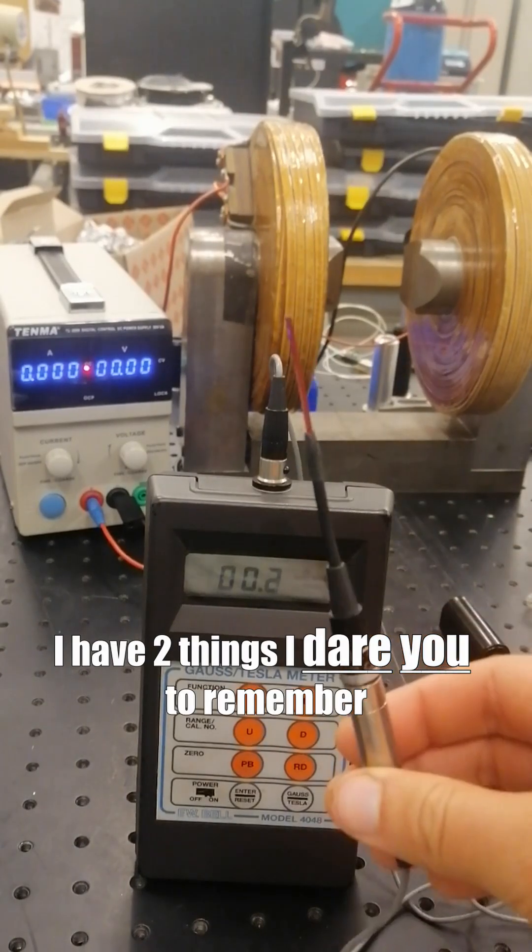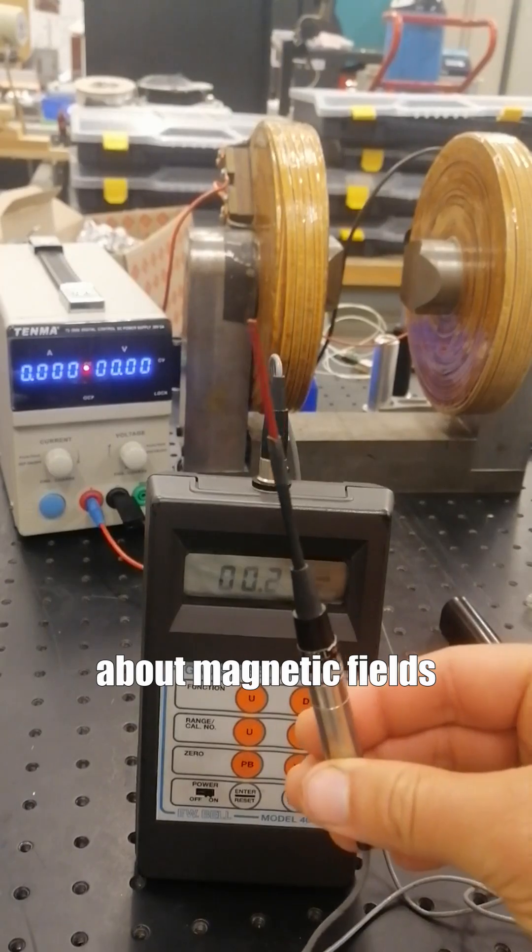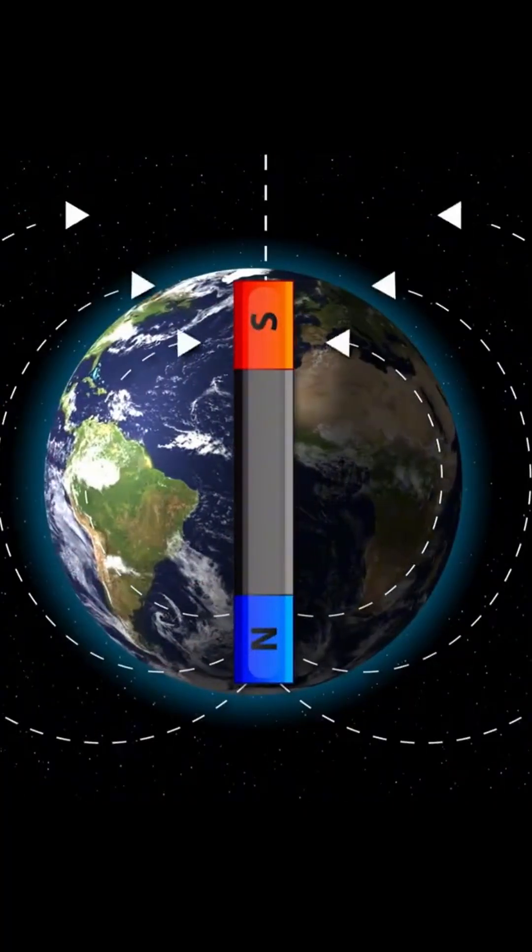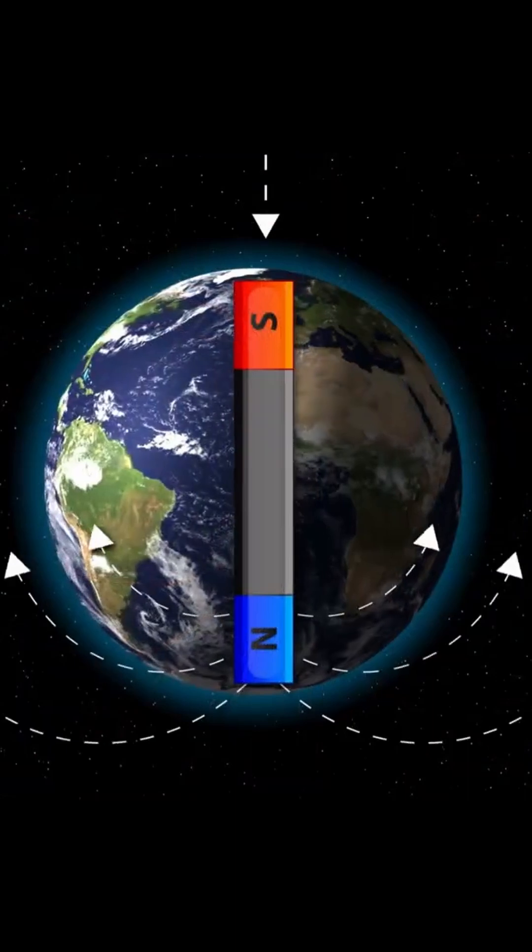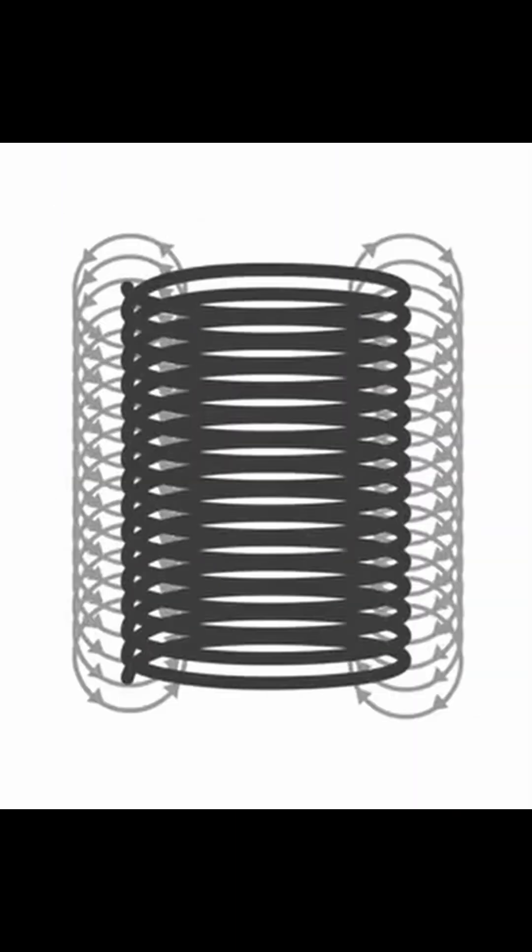And before measuring it, I have two things I want you to remember about magnetic fields. First, the magnetic field can be represented as a flux from the north pole to the south pole. Then, moving charges such as a current generates a magnetic field.